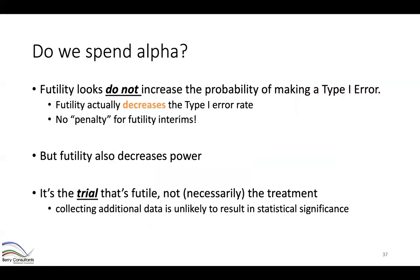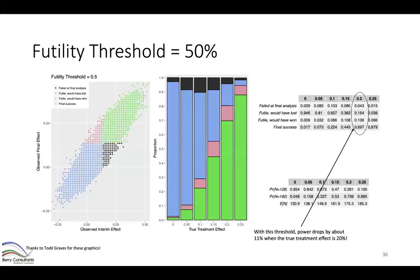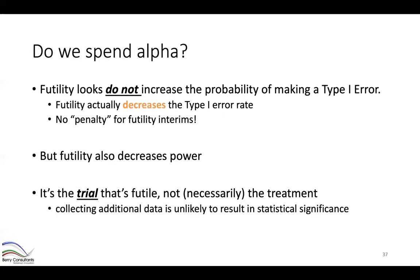The expected sample size decreases as we raise the threshold. Under the null with a 1% threshold, expected sample size was 153; as we continue increasing the threshold, expected sample size goes down. An important question: do we spend alpha for futility interims? With group sequential interims that allow stopping for success, we must adjust thresholds to control type one error. But interims that only allow stopping for futility do not increase the probability of a type one error — in fact, futility actually decreases the type one error rate.